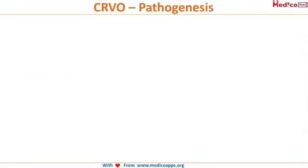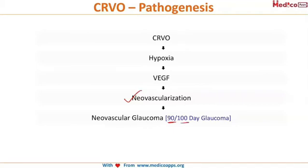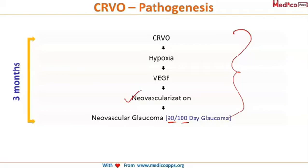In the pathogenesis of CRVO, when there is an occlusion of the vein, there is a relative level of hypoxia — the oxygen supply is cut off — which results in the development of vascular endothelial growth factors (VEGF). Hypoxia throughout the entire retina results in the secretion of VEGF, and these are the mischief mongers that result in neovascularization. This neovascularization further leads to a condition called neovascular glaucoma, or the 90-day glaucoma — some people also call it the 100-day glaucoma — because this entire process takes about 3 months, roughly 90 days, to occur.